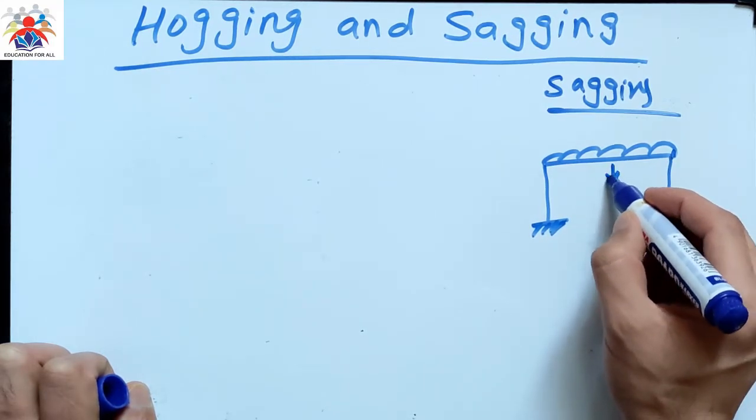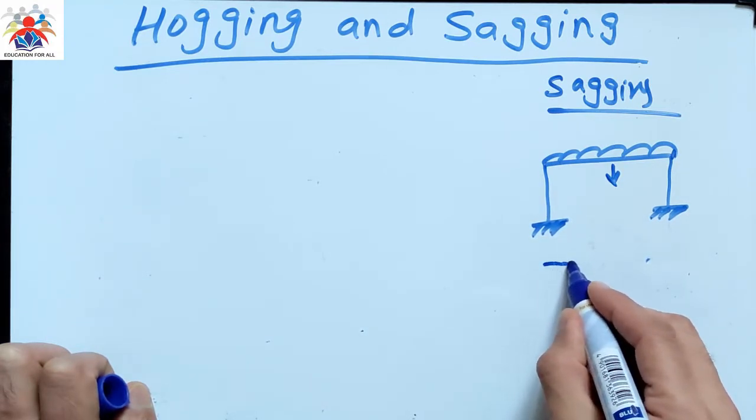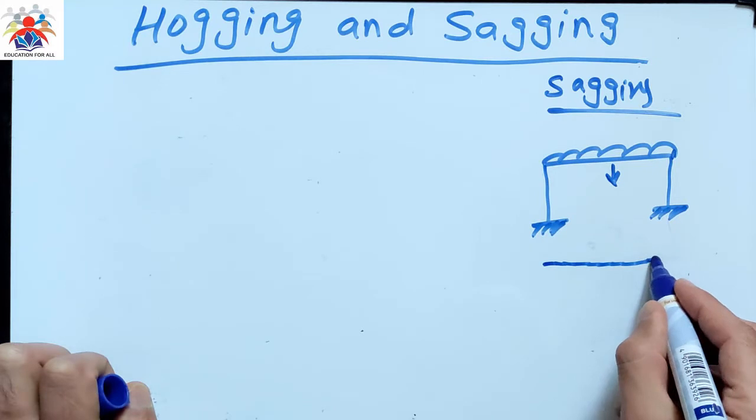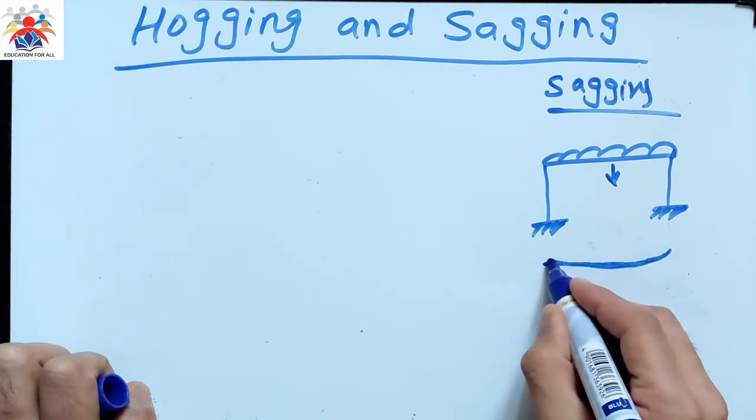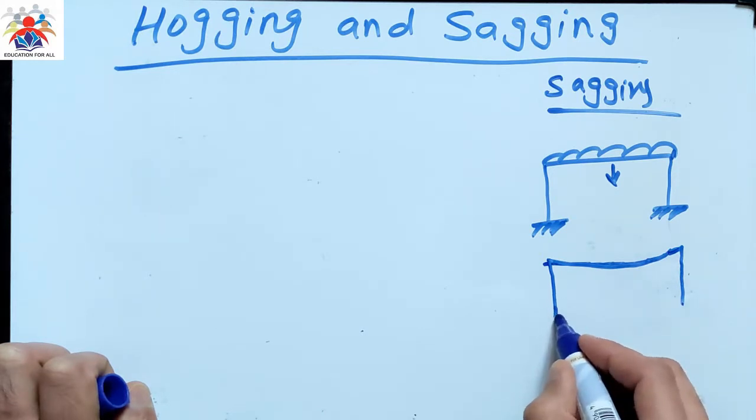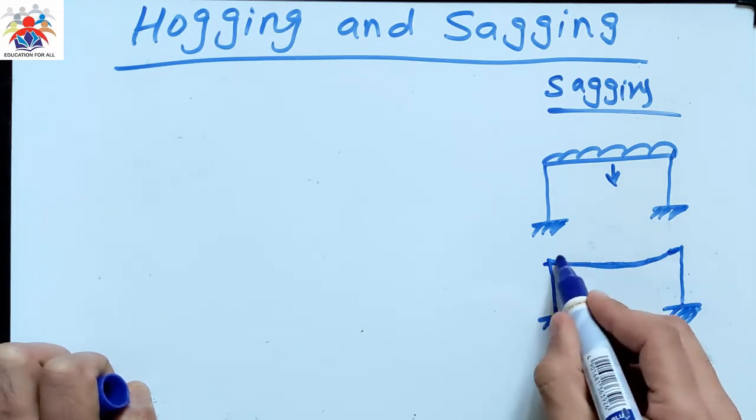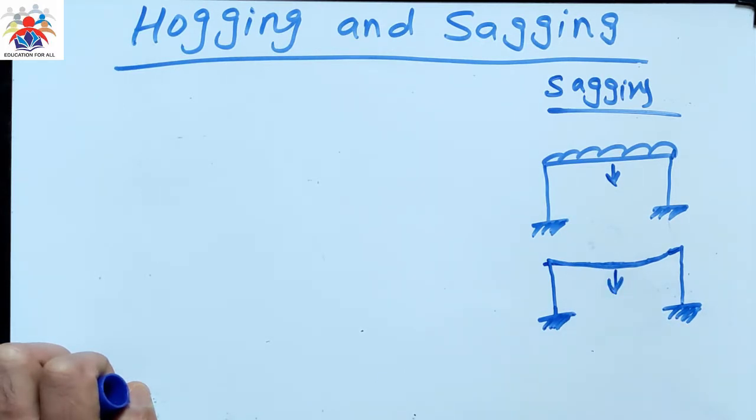As the UDL is acting on the beam, it will try to bend the beam downwards, so the shape of the beam would be something like that. The beam will go downwards. The effect of sagging is positive. This is our sagging. A bend in a beam downwards is called sagging.